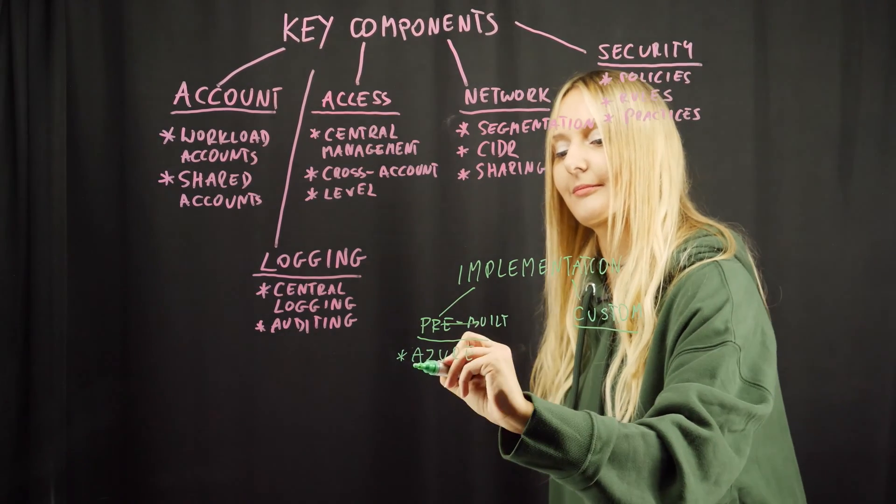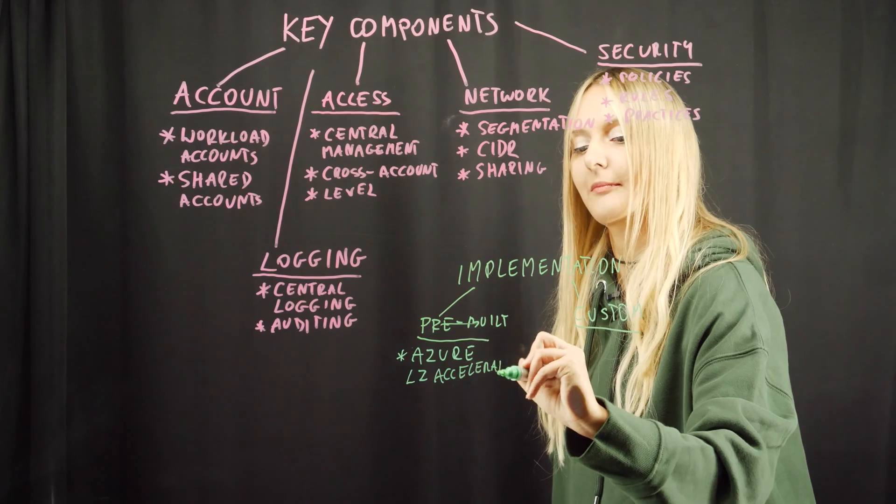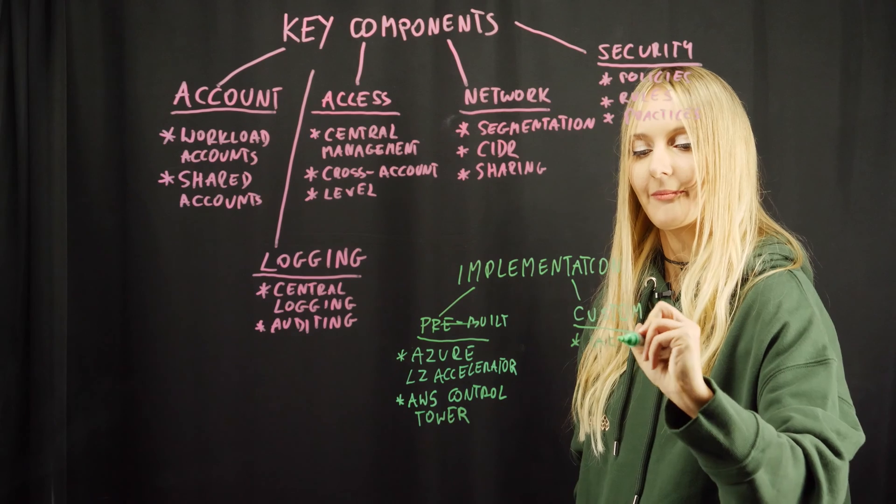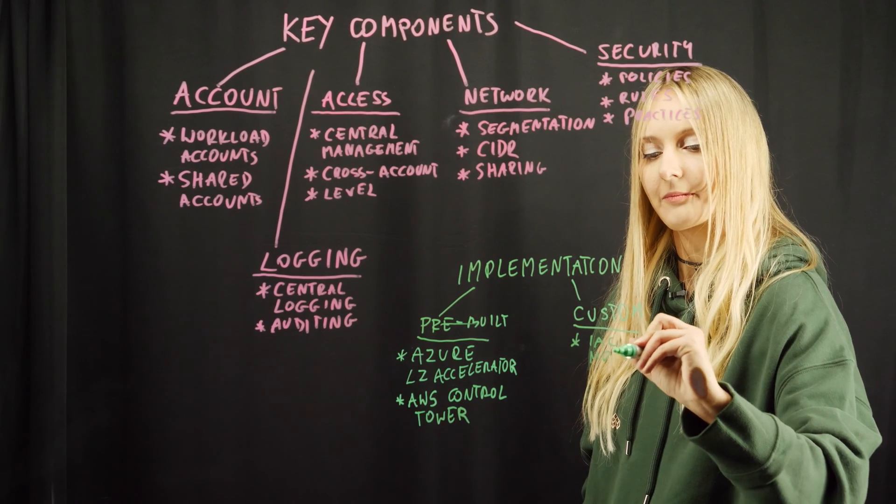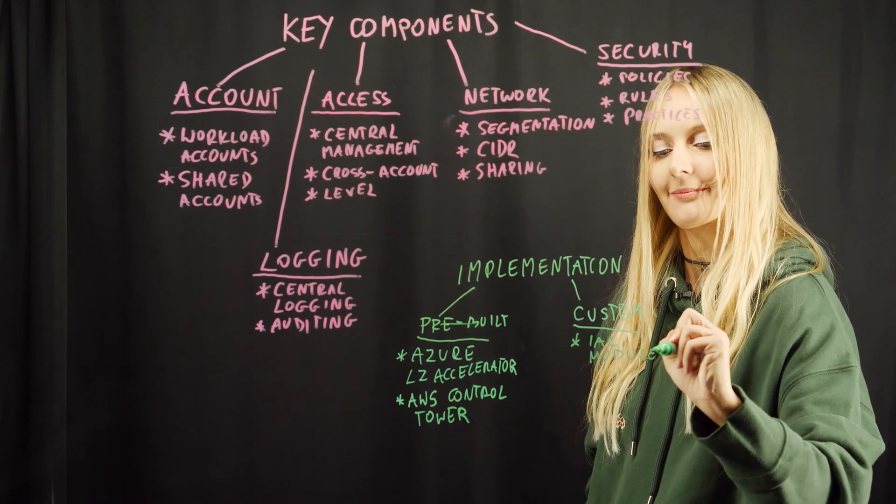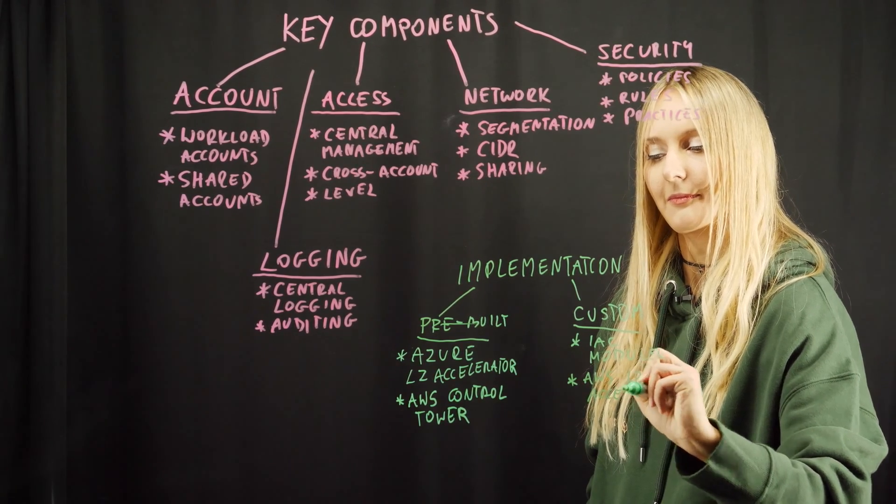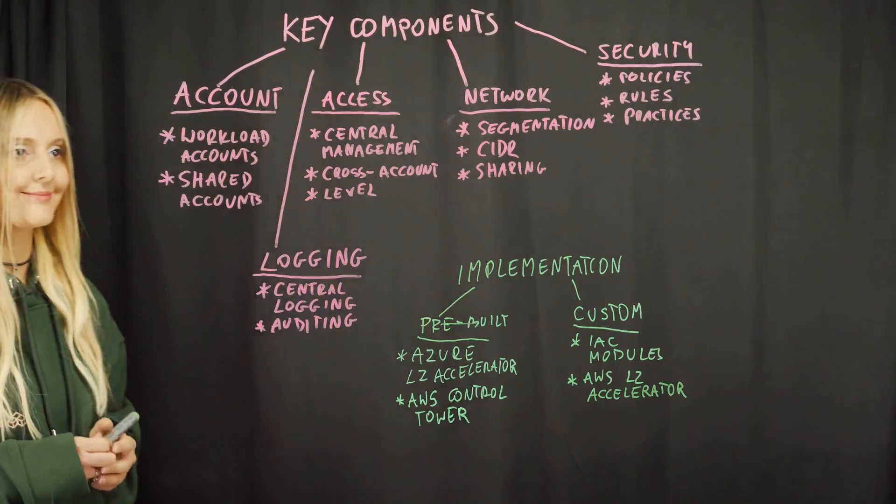With regards to pre-built solutions, Azure Landing Zone Accelerator, or AWS Control Tower. When it comes to custom solutions, you can potentially opt in for a flexible set of your own infrastructure as code modules, or you can also go with AWS Landing Zone Accelerator.